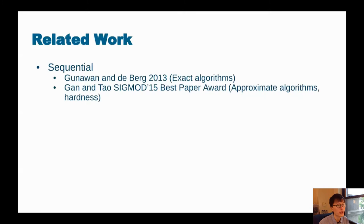Some related work mainly on algorithms. Sequentially, Guennebaud and de Berg in 2013, as well as Gan and Tao in 2015, they designed efficient algorithms for exact and approximate DBSCAN. And Gan and Tao also has fast implementation for exact and approximate DBSCAN sequentially. And they also won the best paper award in 2015 SIGMOD.